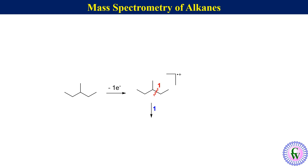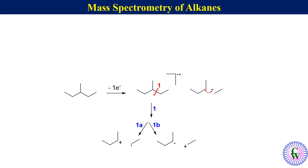There are two possibilities for fragmentation at the most substituted carbon. Path 1 involves breaking this C–C bond, and this cleavage is of two types. In type 1a, the shared electron moves to the ethyl group, leading to the formation of an ethyl radical and a secondary butyl carbocation. In type 1b, the shared electron moves to the secondary butyl group, leading to the formation of a secondary butyl radical and an ethyl carbocation.